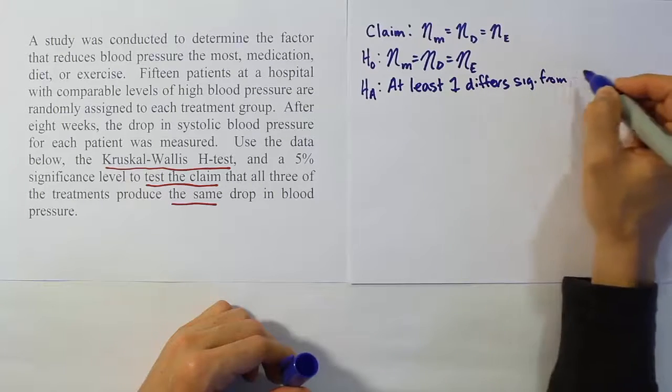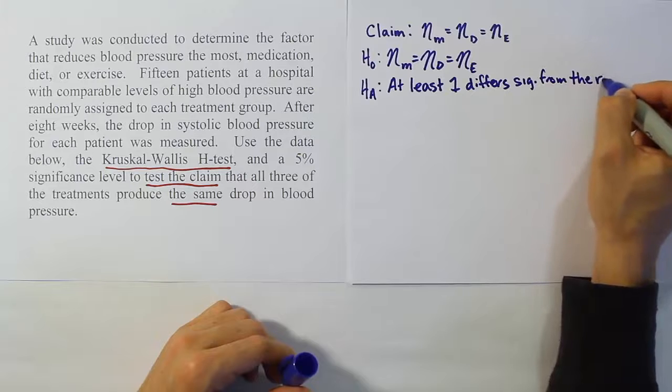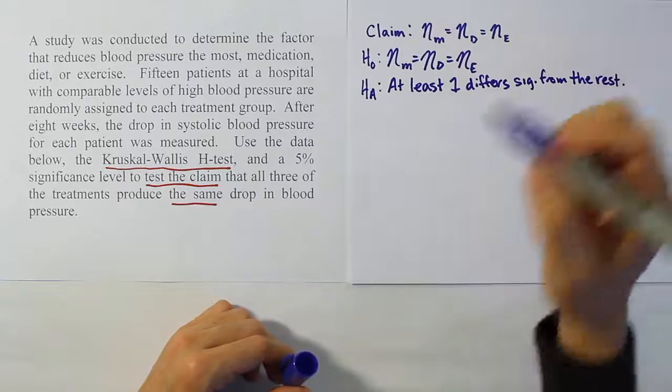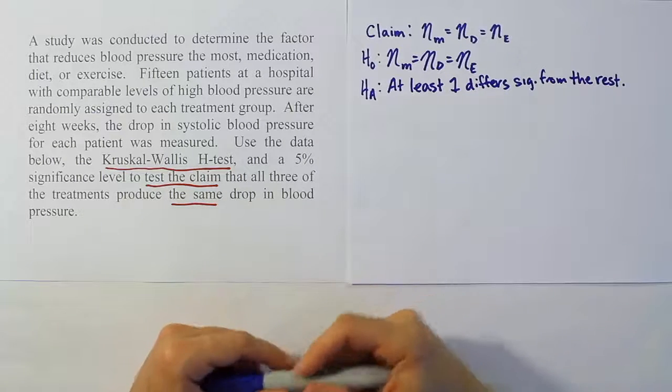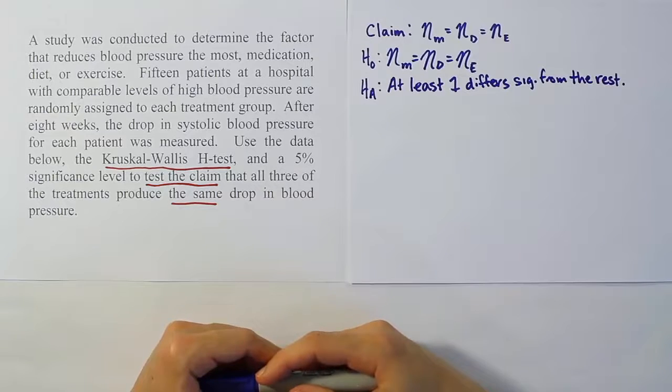And of course we know that HA always says that at least one differs significantly from the rest. That's your HA, that at least one of the treatments differs significantly from the rest.